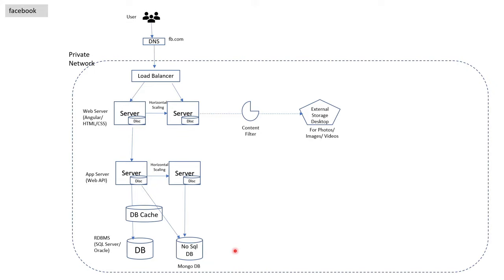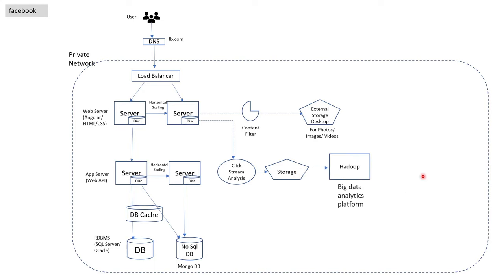In the next step, we will include some analytics for our application Facebook. You might know that your every click or activity on the Facebook website is captured. It is then used for showing ads based on your activities and clicks. For this we will use click stream analysis, which is used to capture your actions on Facebook. All these clicks and actions will be saved in some storage, and then with the help of a big data analytics platform like Hadoop, analysis will be done on a regular basis.